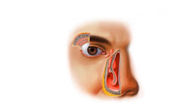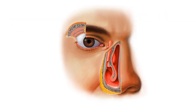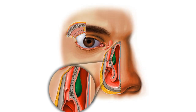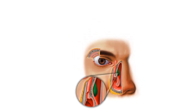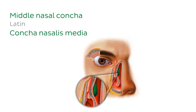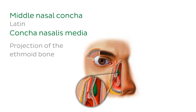Moving to the nasal cavity, we can see right into it. The skin, cartilage, and nasal bone have been removed. What we can see highlighted in green now is the middle nasal concha. This is a projection of the ethmoid bone into the nasal cavity.